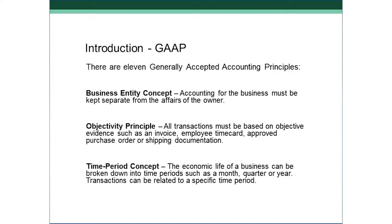The Time Period Concept says that the life of a business can be broken down into equal time periods. The most important time period is one year because every business is judged on a yearly basis. If you're a public company, you also produce financial statements on a quarterly basis — every public company must disclose financial information to the public quarterly. Whether you produce financial reports on a monthly basis is up to your business, but most businesses do close the books monthly to keep a gauge on how the business is doing.